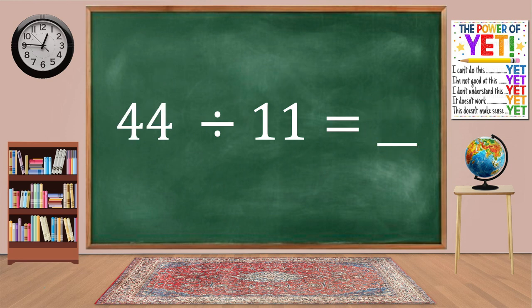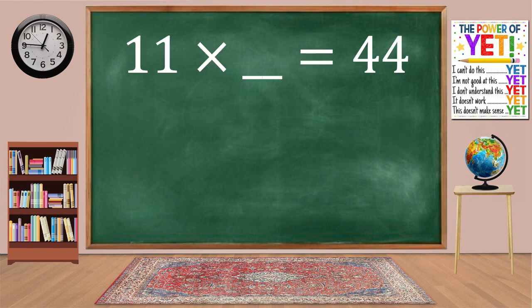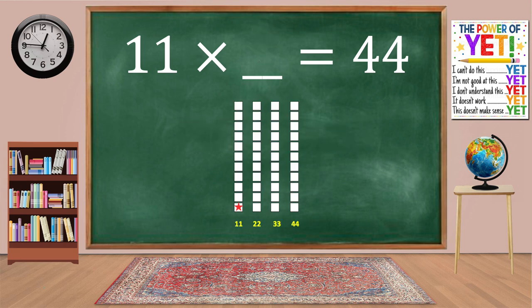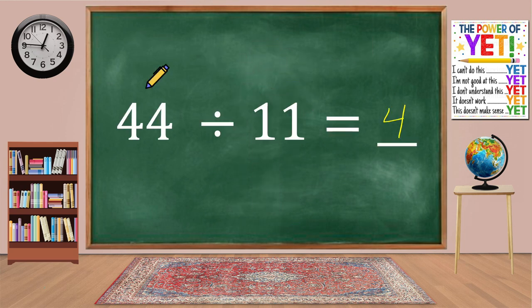44 divided by 11 equals blank. We have four columns. 11 times 4 equals 44. 44 divided by 11 equals 4.